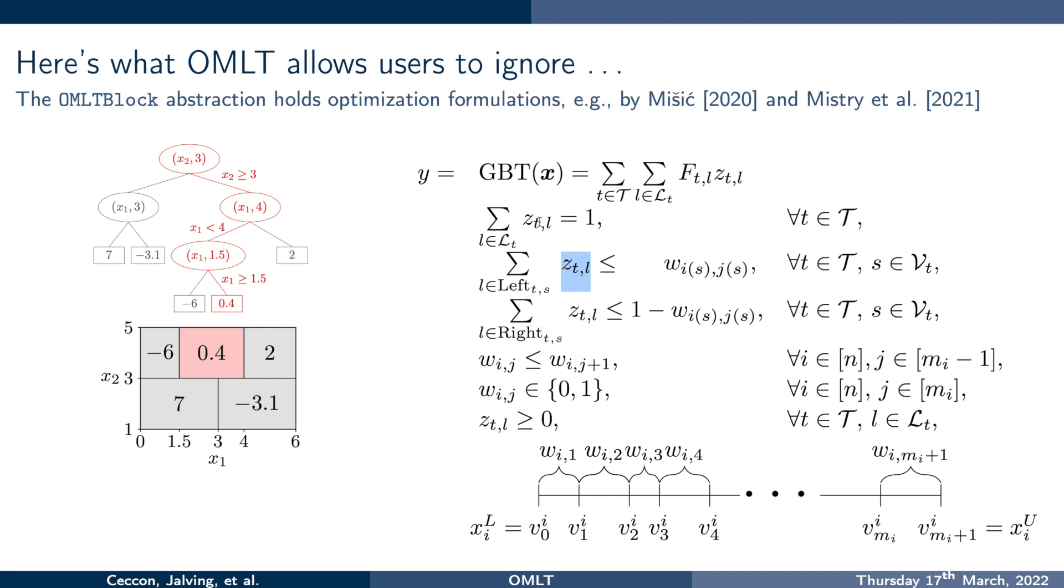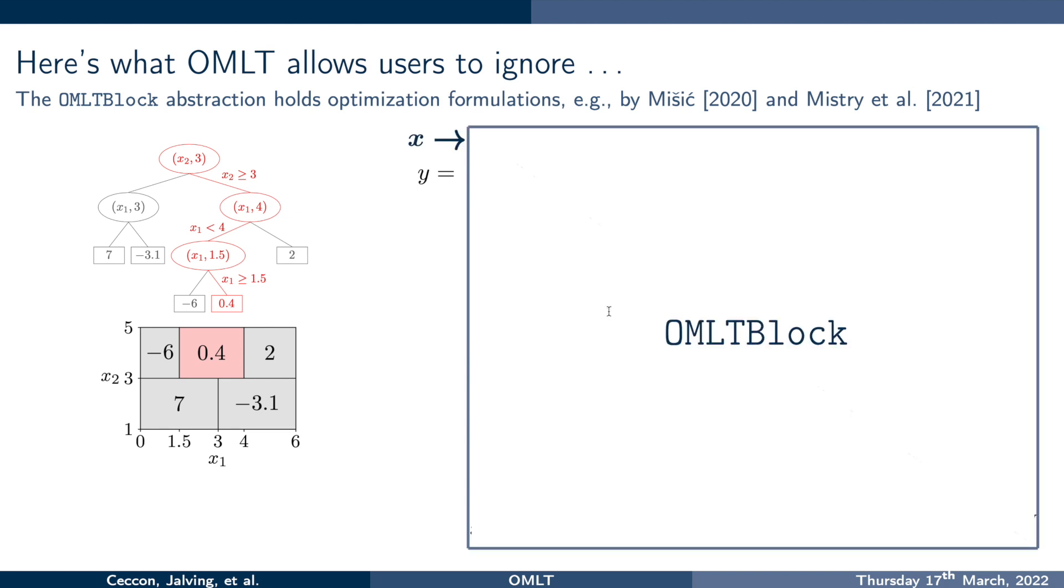So basically what happens is that these GBT formulations, they are introducing two new types of variables. They're introducing variables W and they're introducing variables Z. And this is just sort of annoying to program. So what omelette is doing is that you can go and look into the omelette block if you wish, but if you don't want to, all you have to do is basically take your trained gradient boosted tree, use omelette to say this is going to be part of my constraints, and then in your larger optimization problem hook the inputs of the gradient boosted tree and the output of the gradient boosted tree to the other variables in your optimization problem.